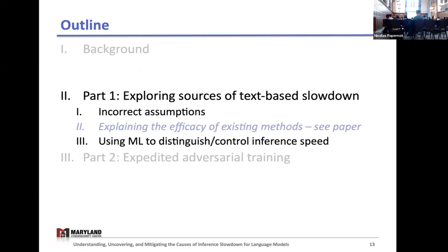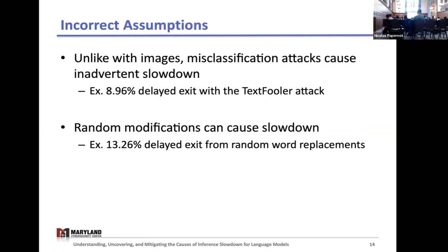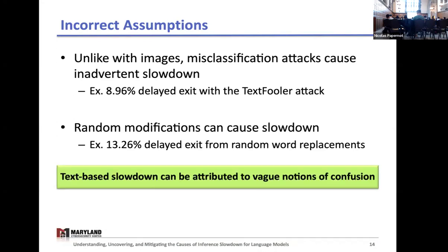Now I'll talk about our exploration of the sources of text-based slowdown. I'll start by explaining some assumptions we had that were interestingly incorrect, and then I'll talk about a way we can use a machine learning model to understand the distinction between earlier exiting inputs and later exiting inputs. Unlike with images, we found that with text, misclassification attacks—attacks that intend to cause misclassification—will usually come with a slight inadvertent slowdown effect, and even random modifications to a text can often cause slowdown. Text-based slowdown is relatively easy to induce because it can be attributed to vague notions of confusion, and confusion is a more flexible and less constrained goal than misclassification. But even though we can see this model confusion happening, it's hard to link this confusion to discernible patterns in a text.